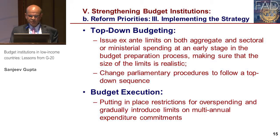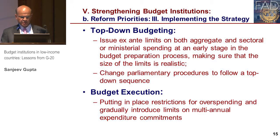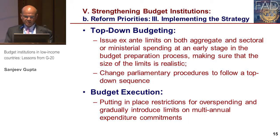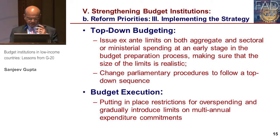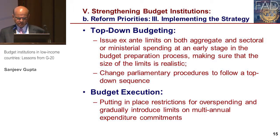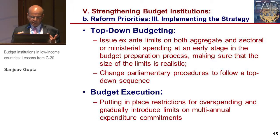As regarding implementing the strategy, I would focus on top-down budgeting. The issue is having limits on both aggregate and sectoral spending at an early stage and making sure those limits are realistic, then changing parliamentary procedures to follow a top-down sequence. Finally, budget execution must ensure there are restrictions for overspending and limits on multi-annual expenditure commitments.